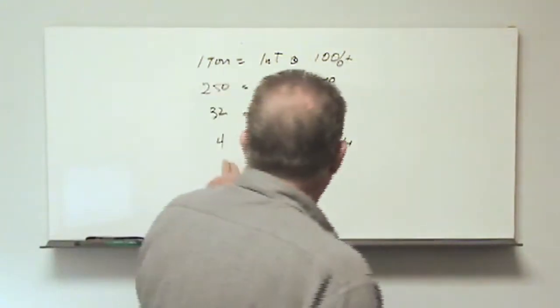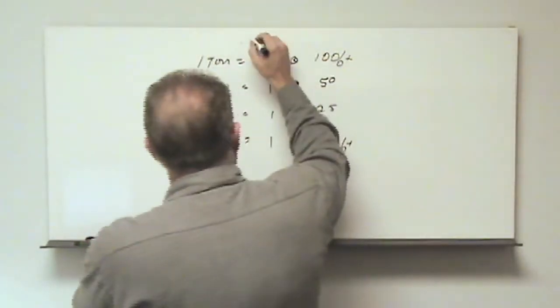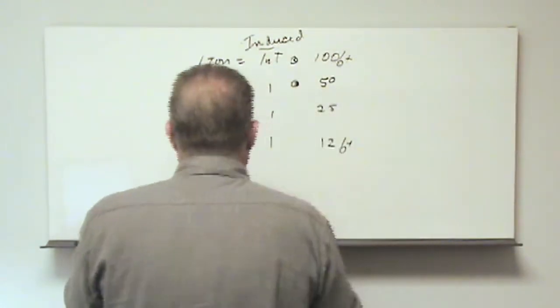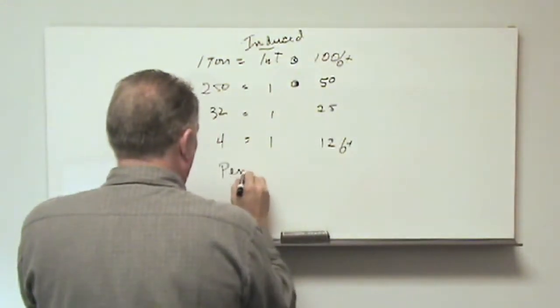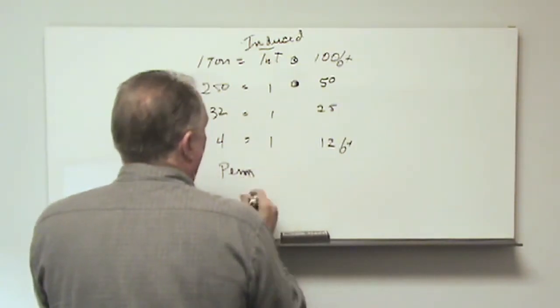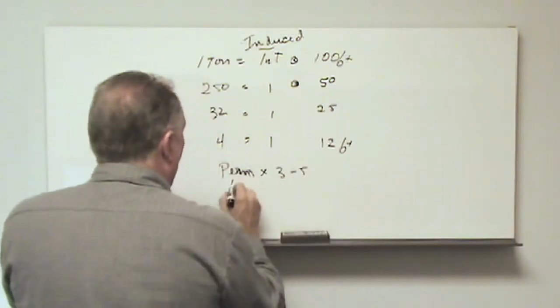Now remember though that we have multipliers, and this is purely induced. We have multipliers. We have perm, permanent magnetic effect. The perm can add perhaps 3 to 5. We have hollow.